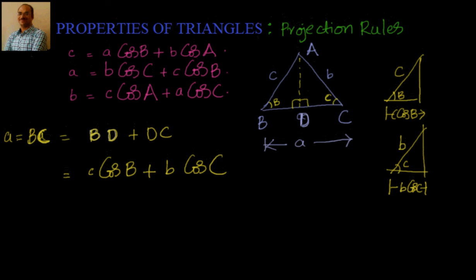So the projection rules are: a equals b·cosC plus c·cosB — we have proven that here — and b equals a·cosC plus c·cosA. That's it. See you in the next video where we will go through the law of tangents. Thanks for visiting, bye for now!